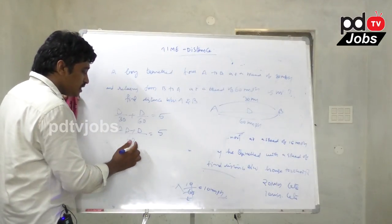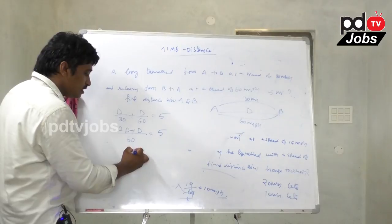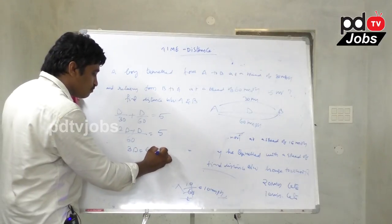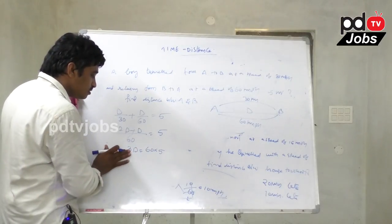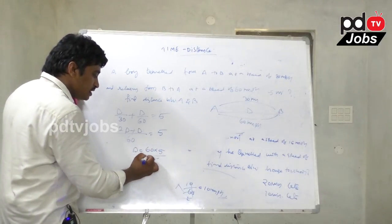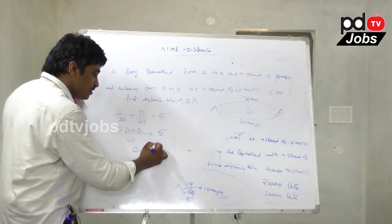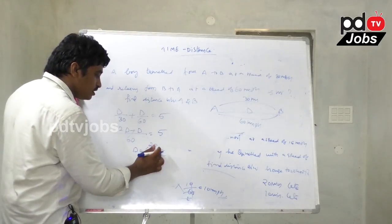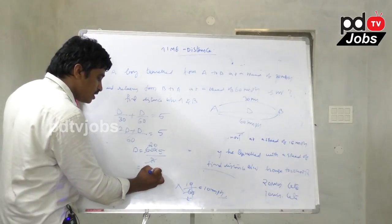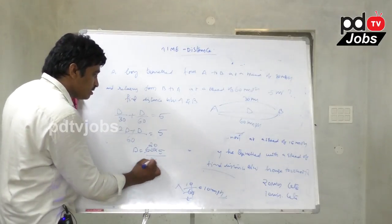2D plus D equals 3D. So 3D over 60 equals 5, which means 3D equals 300. Therefore D equals 100 km.